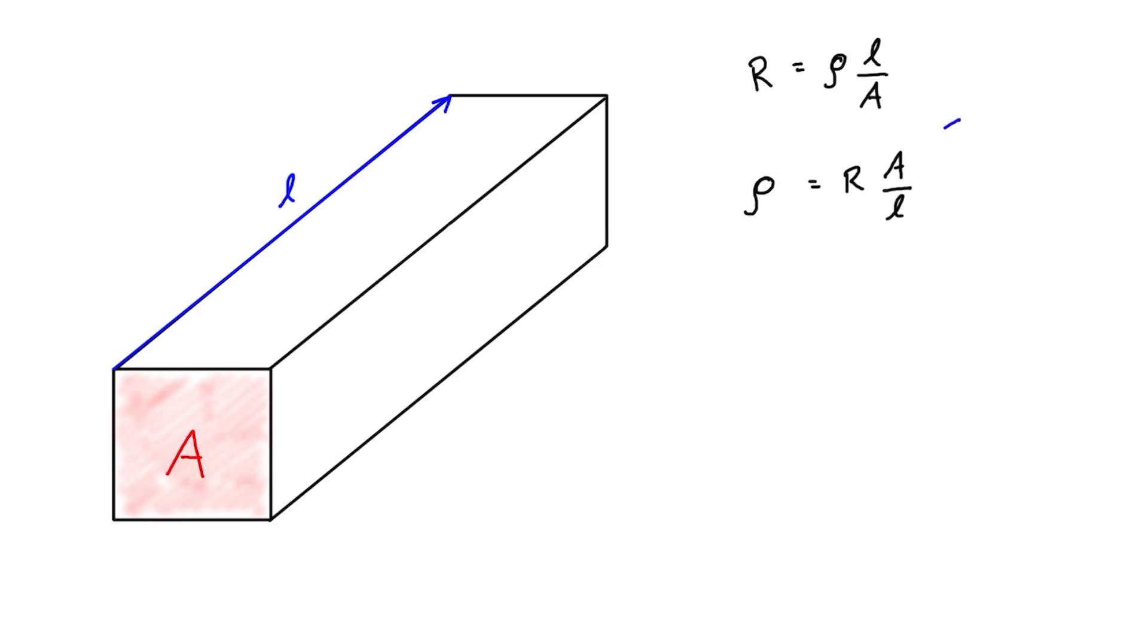So if we give area in meters squared and length in meters, those are going to cancel out to meters. Resistance we give the unit of ohms, and so that means that we're left for resistivity with a unit of ohm meters.